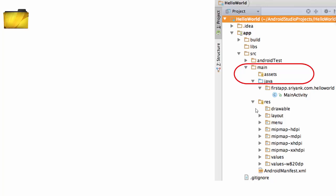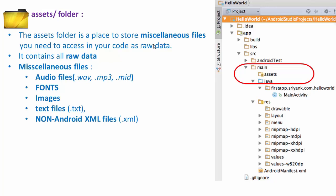From the last video, under the main folder you saw the Java file and resource file. There is one more folder that we can create manually — the assets folder. Inside the assets folder you can store miscellaneous files that we need to access in our code as raw data. This includes audio files such as MP3 files, fonts, images, text files, and non-Android XML files. So if you want to store images of your choice or change the font of your application text, you can store your own fonts manually inside the assets folder and access them inside your application.